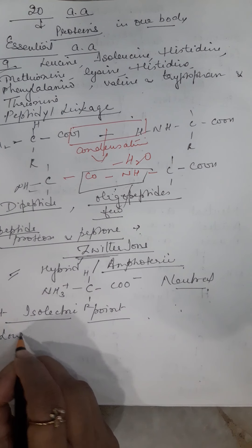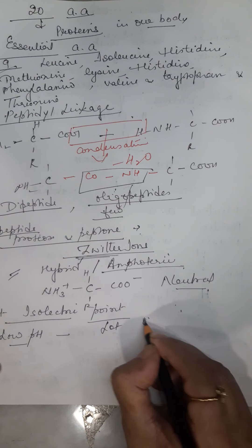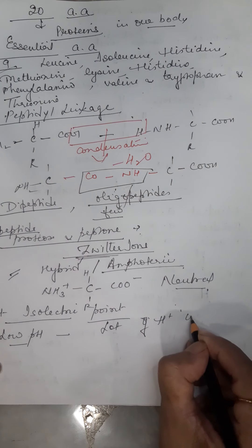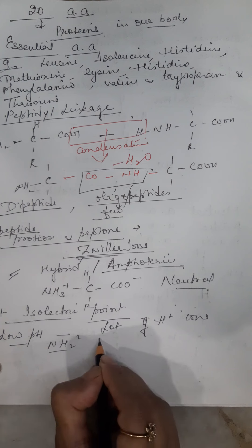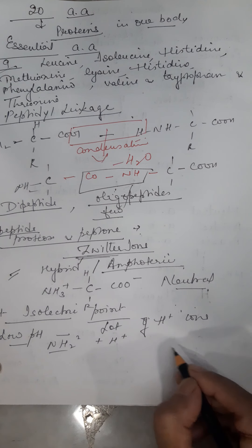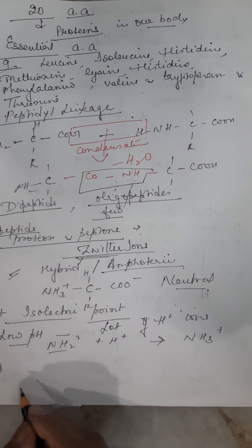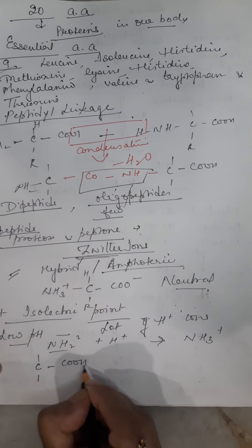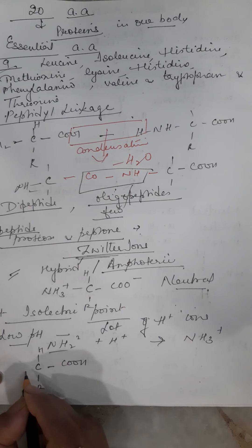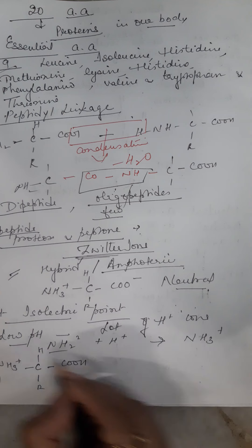But when there is low pH, there are lots of hydrogen ions. So the amino group will accept the hydrogen ion and form a positive ion. In such case, this acquires a positive charge.